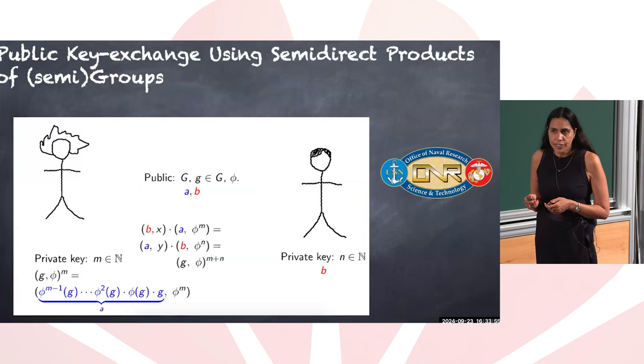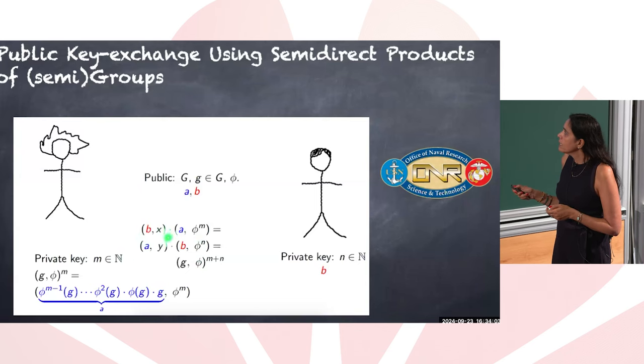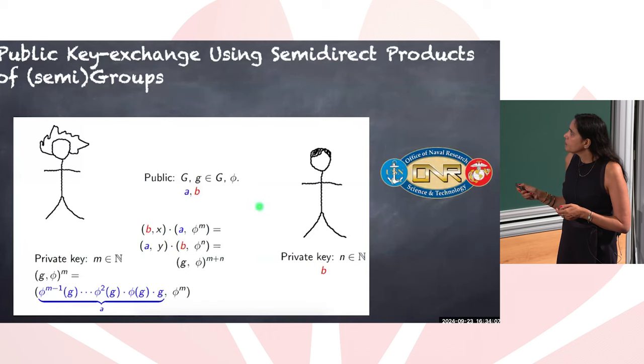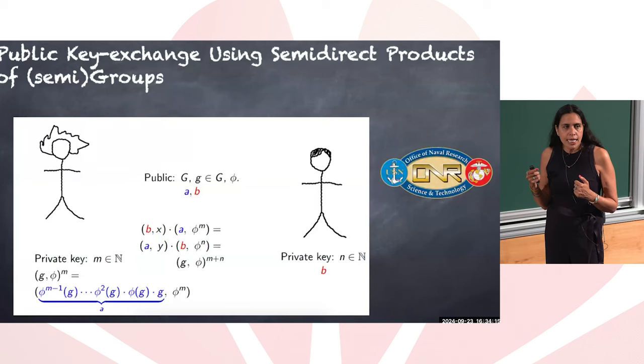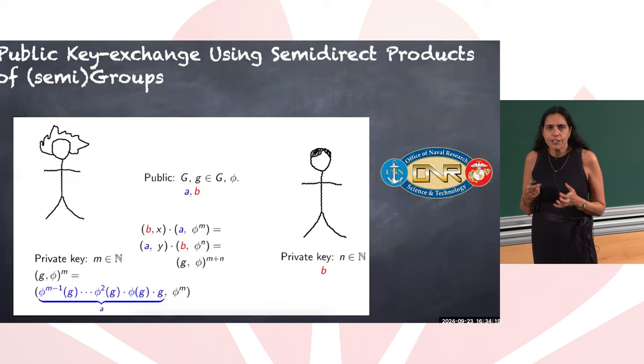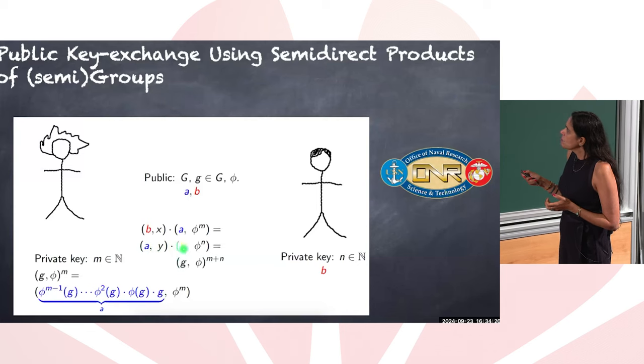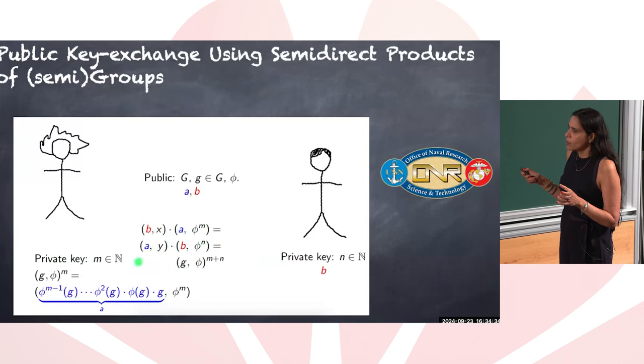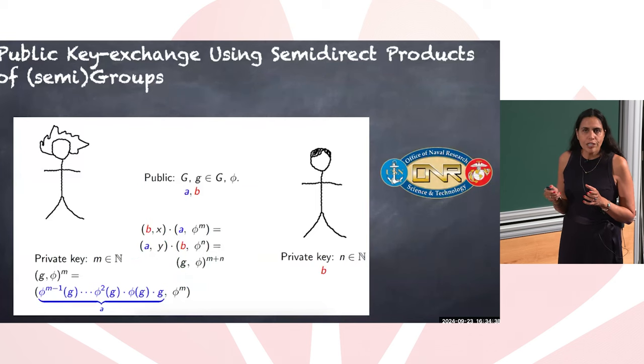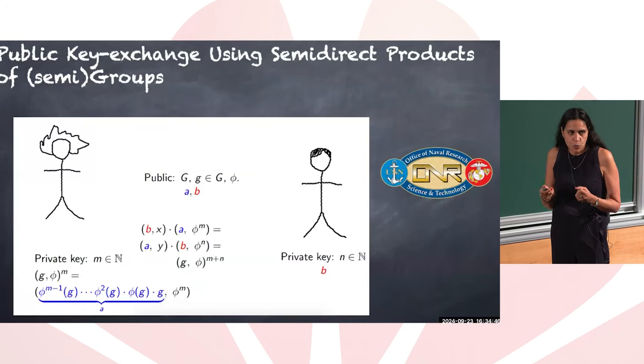Your question is, what is the shared key? So I claim that Alice knows b, this is public. Alice knows a. Alice knows m, that's her private key. Note that Alice doesn't know x, doesn't care, because we claim that the shared key is the first component of this product. So Bob knows a, he knows b, and he knows n. Doesn't know y, he doesn't care. And interestingly enough, what Alice can compute, the first component is the same as what Bob can compute, is equal to g^(phi^(m+n)). Similar idea that I said the variation of Diffie-Hellman doesn't work here. It works.